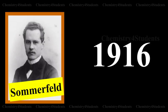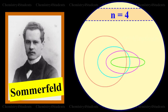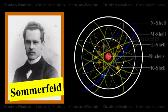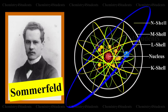In 1916, Sommerfeld modified Bohr's model by introducing elliptical orbits for electron paths. He defined such energy levels for every major energy level predicted by Bohr.